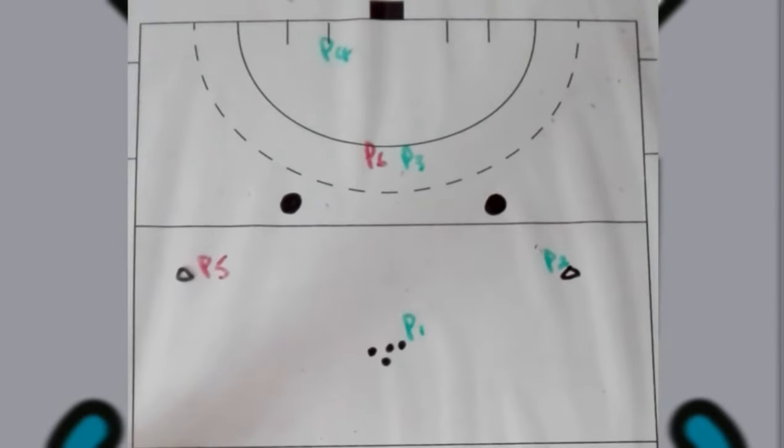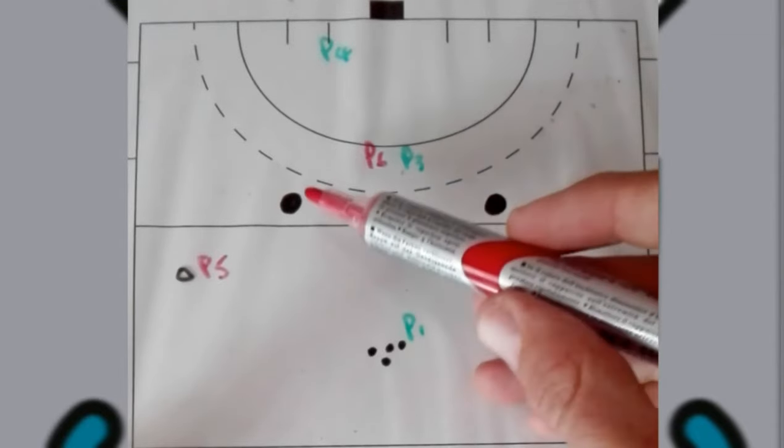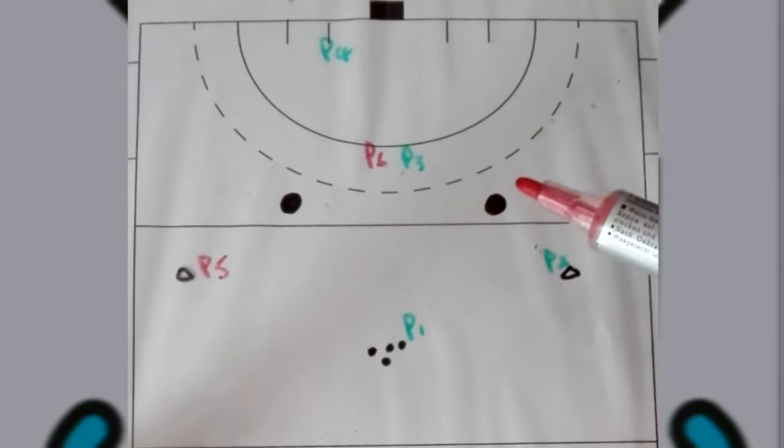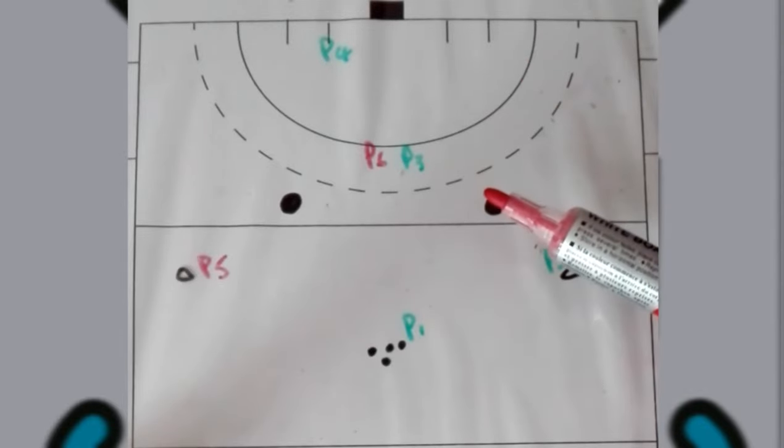In this give-and-go crash ball drill that you can use with your team, the circles over here is an object that you can use. So if you have tires or anything that you can just place, that's a stationary object to implement a defender in this drill.